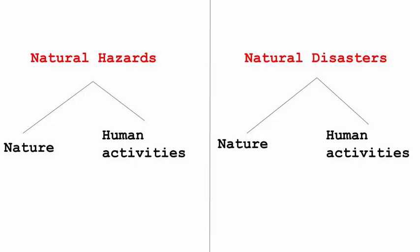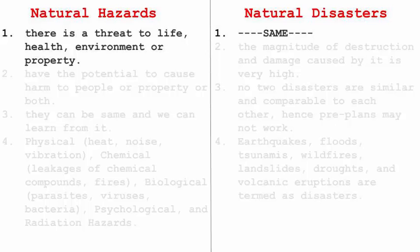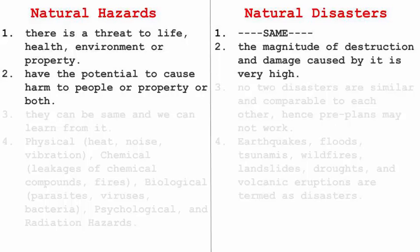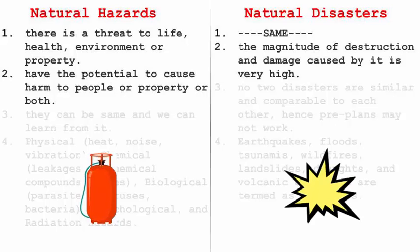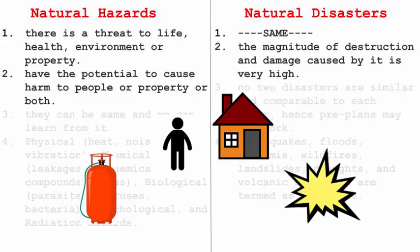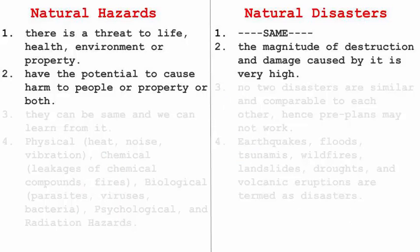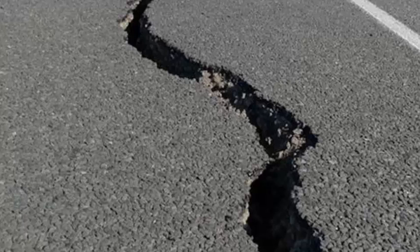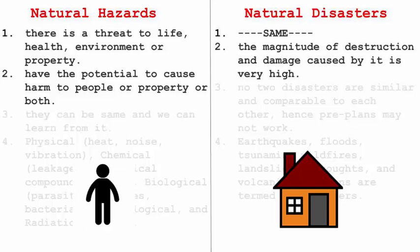Hazards and disasters are consequences of both natural forces and human activities. Let's broadly understand the differences between natural hazards and natural disasters. In both cases, there is always a threat to life, health, environment, and property. Natural hazards have the potential to cause harm to people or property or sometimes both. For example, during a gas leak or an explosion, it can affect both property as well as humans — or if no humans are present, just the property. On the other hand, natural disasters are larger in magnitude and the destruction and damages caused are very high. If there is a huge crack due to an earthquake, it will not spare any particular institution, place, or human settlement — it will destroy everything in its way.